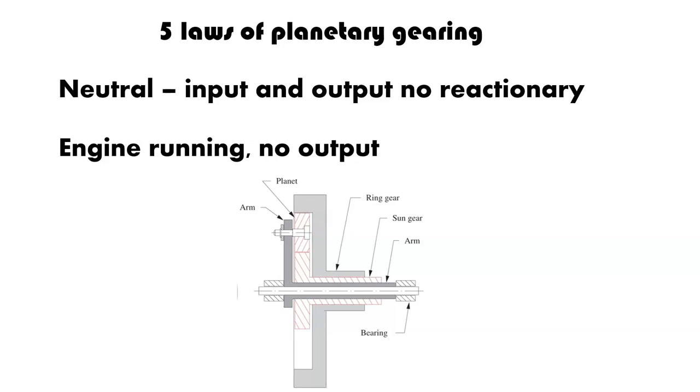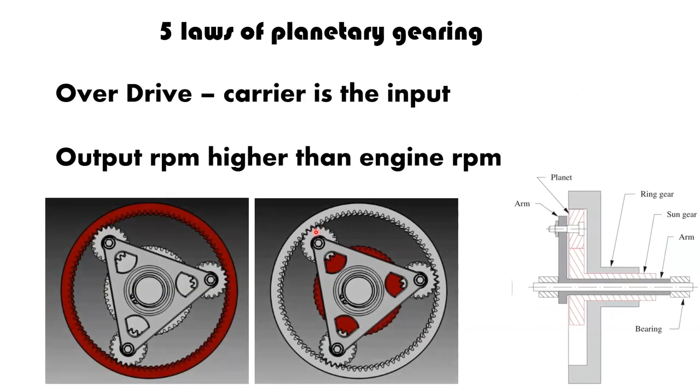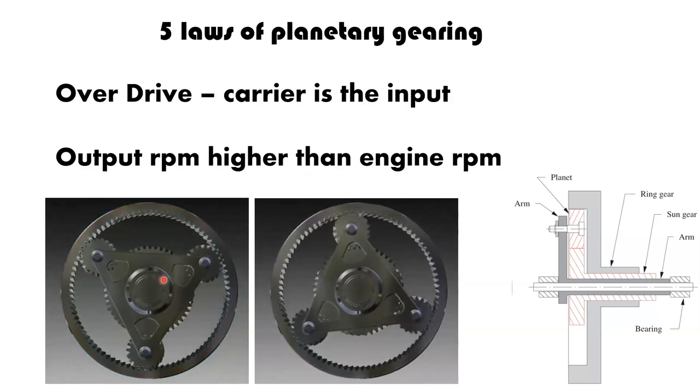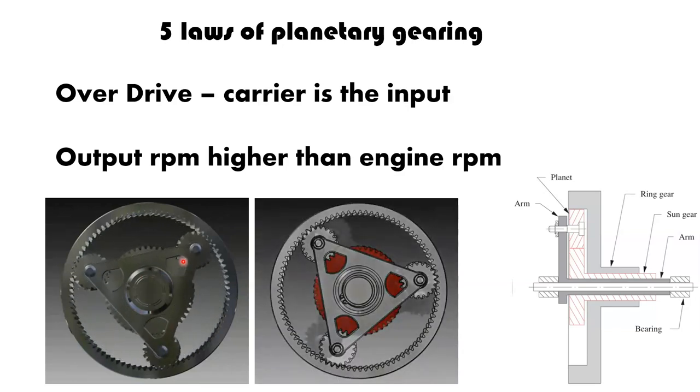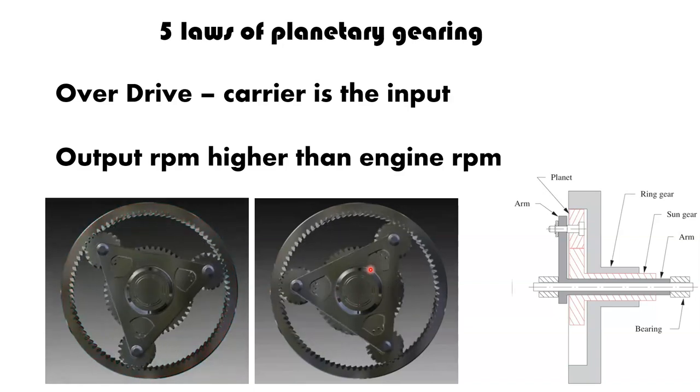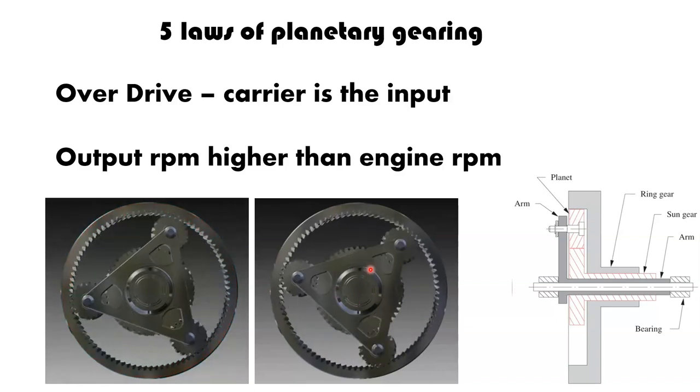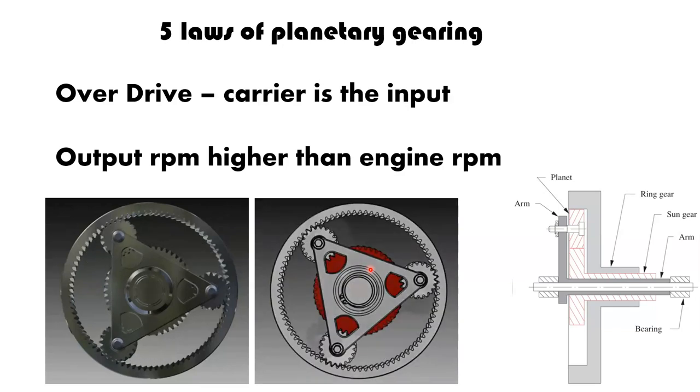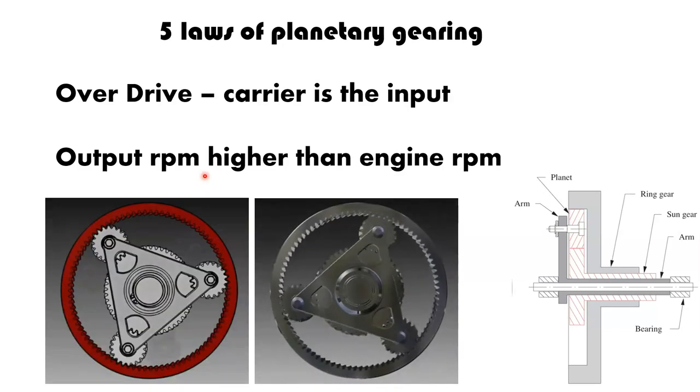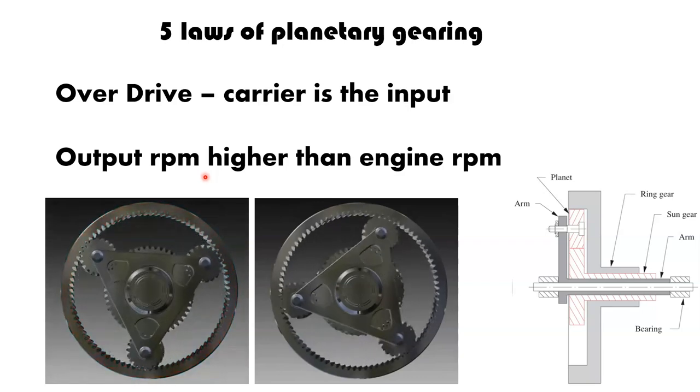The next one, like I said, was overdrive. And overdrive, your carrier is the output. So, here on these two gifs, you can see, this triangle represents the carrier. The carrier. So, your carrier, imagine that is your input. So, this is what the motor is tied to, in both cases. Now, your carrier, like I said, there are two different types of overdrive.